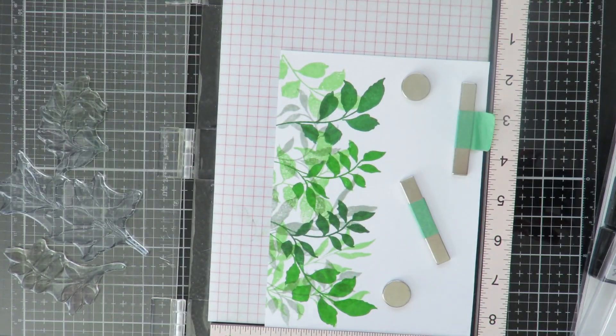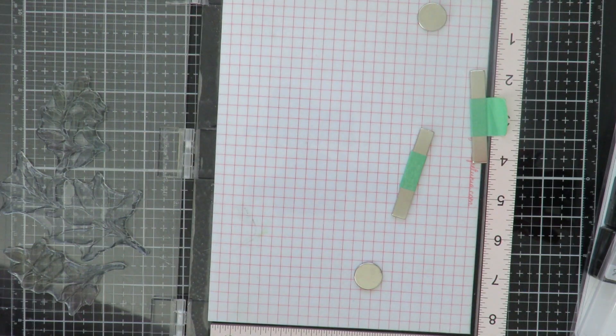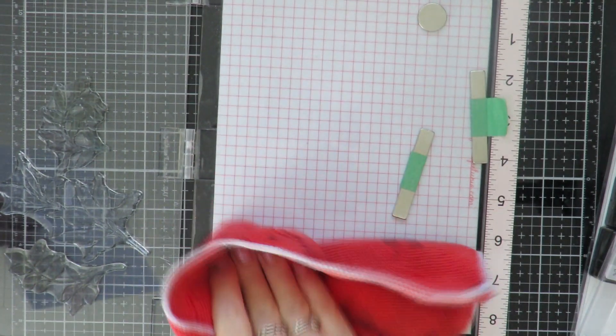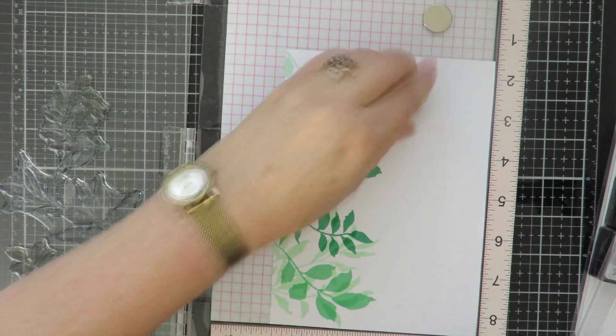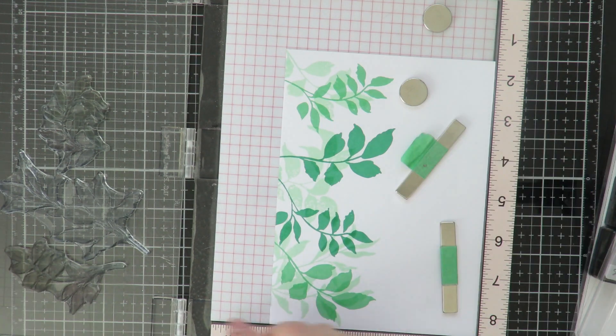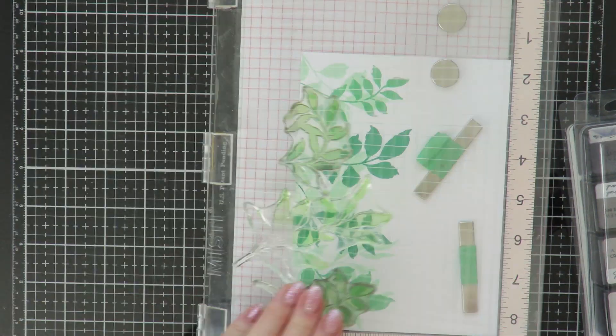But I don't know, I think it just looks a little bit busy. And then I go back and put the Pinkfresh Studio one back in and I use the Firefly color out of the Altenew set and put another layer of leaves on that one, and I think I like that one better.